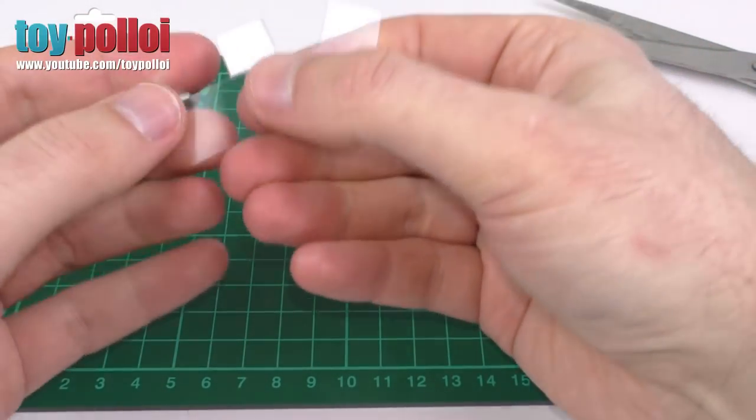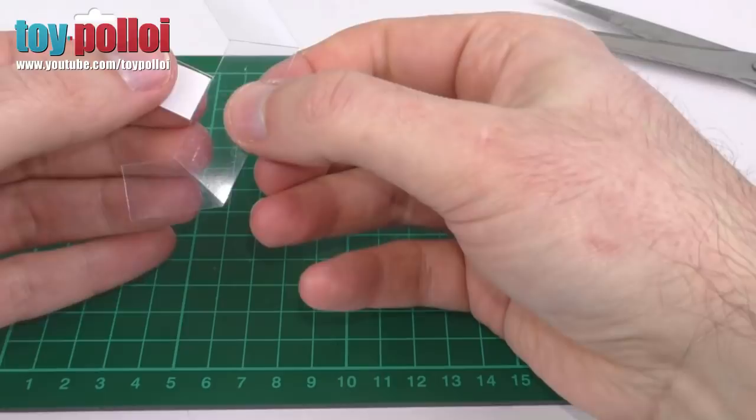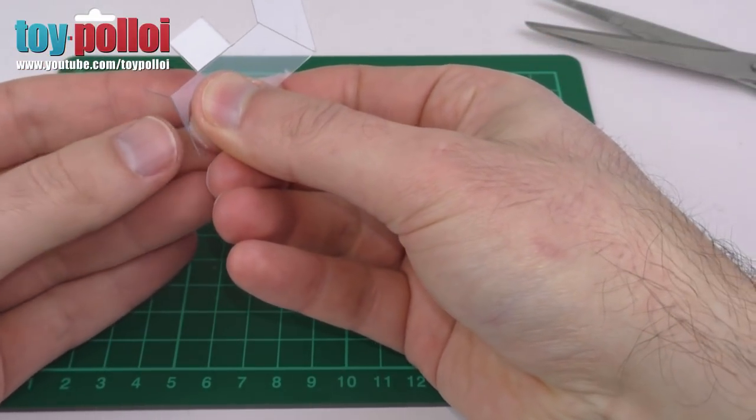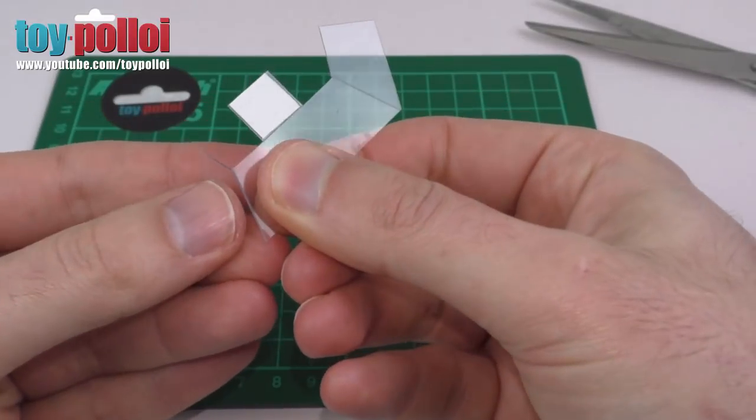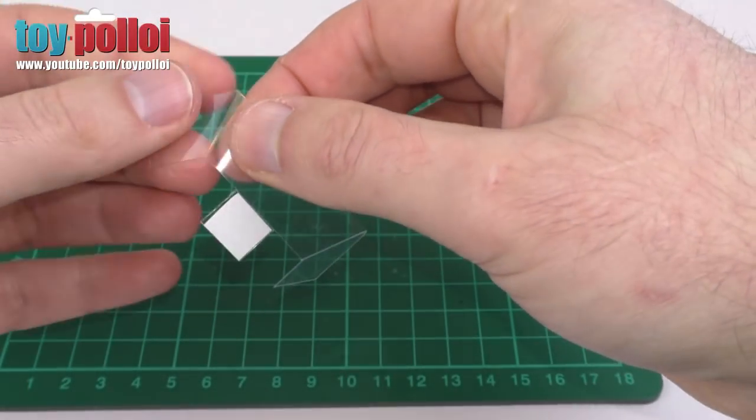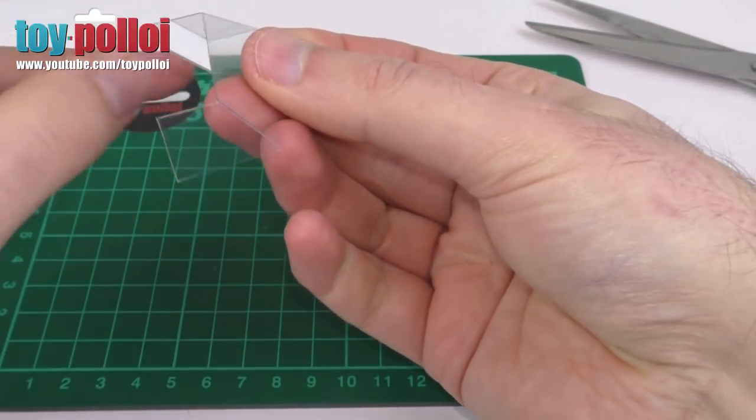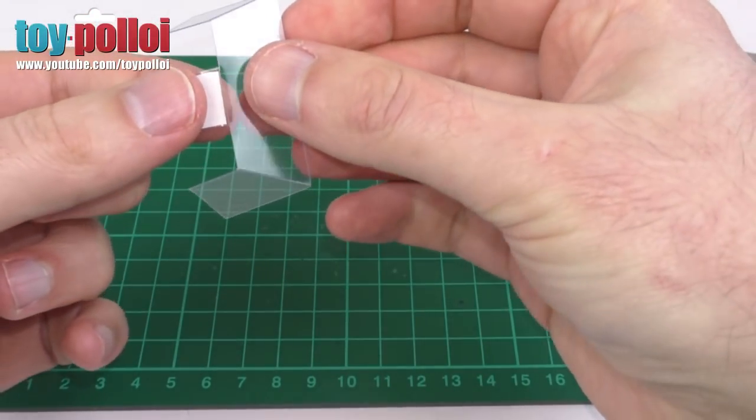And now we can shape this cockpit glass. So what you do is where you've scored, we can just gently fold it and you'll see that the acetate bends very neatly just because you put a scored line there. We can do the same on the other side. You can see that starting to look like the right shape, and then we can just bend the tab down as well, which is the other section that we need.